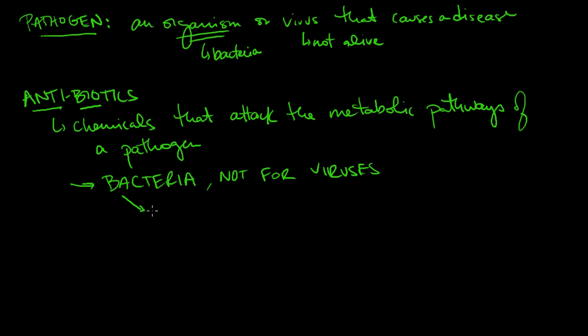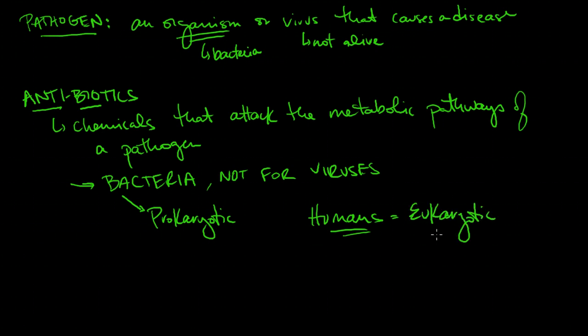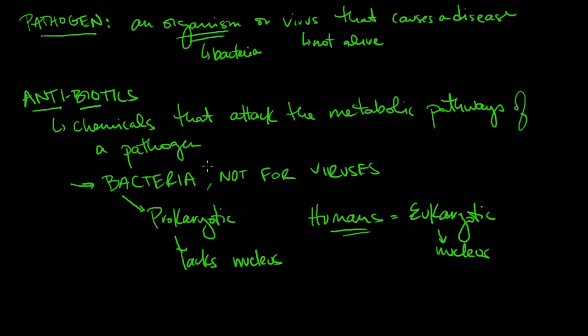Bacteria are prokaryotic cells. Humans are eukaryotic, which means there's a nucleus in the cell and other fancy organelles like endoplasmic reticulum and Golgi bodies. Prokaryotic means it lacks a nucleus. When we're infected by bacteria, we can take these chemicals that affect prokaryotic metabolic pathways or metabolism without hurting ourselves.